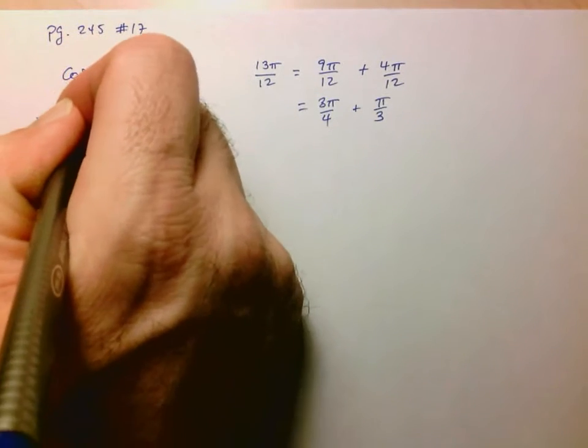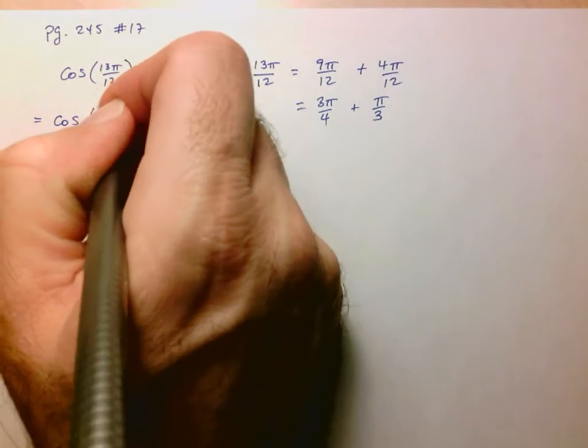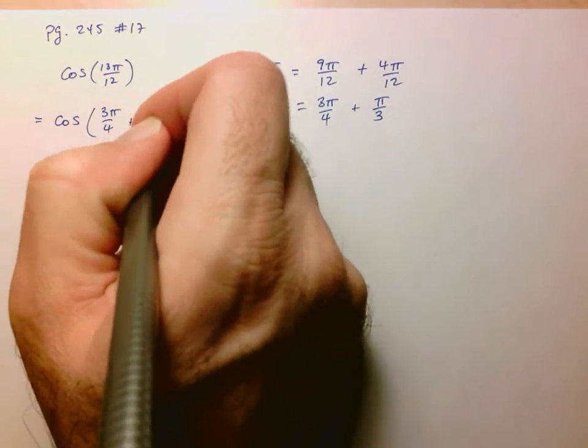So that means that I can rewrite this expression as cosine of 3π over 4 plus π over 3.